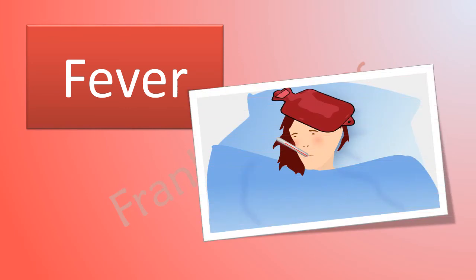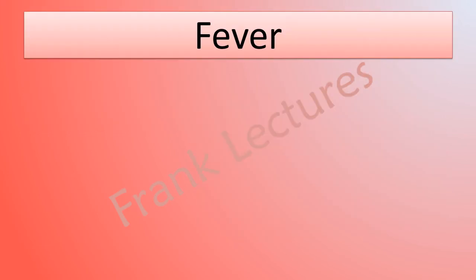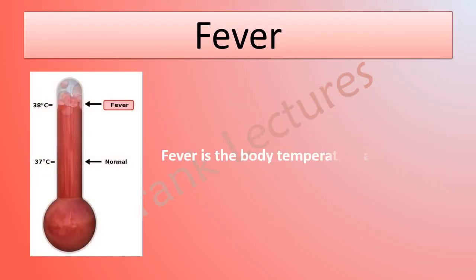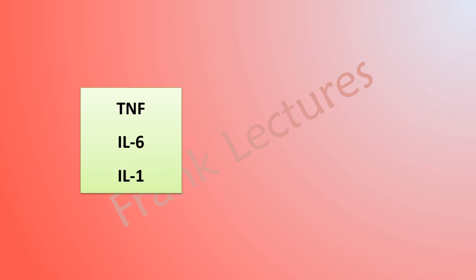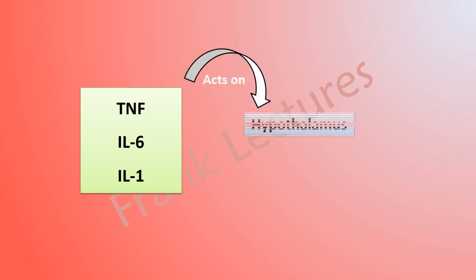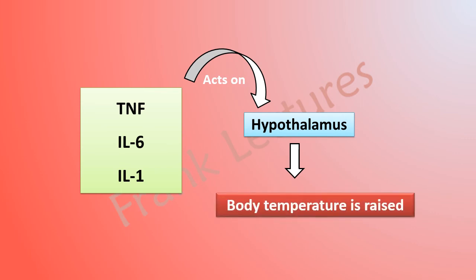Let us now understand the role of fever in innate immune defense. Fever is body temperature above 37 degrees Celsius or 98.6 degrees Fahrenheit. Our body's internal temperature is controlled by the hypothalamus, a portion of the brain just above the brain stem. In inflammation, tumor necrosis factor, interleukin-6, and interleukin-1 are produced. These molecules act on the hypothalamus and raise body temperature. These cytokines are known as endogenous pyrogens — that is, host-derived fever-causing agents.